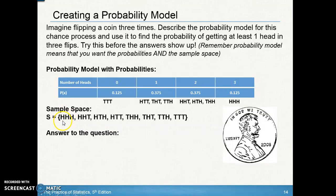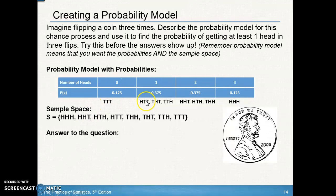Let's look at our sample space. There are eight possibilities when flipping a coin three times: HHH, HHT, HTH, HTT, THH, THT, TTH, TTT. Now looking at the probability model for zero heads, one head, two heads, three heads — from the sample space, three tails gives zero heads (1 out of 8), one head occurs in three ways (3/8), two heads also three ways (3/8), and all three heads just one way (1/8).